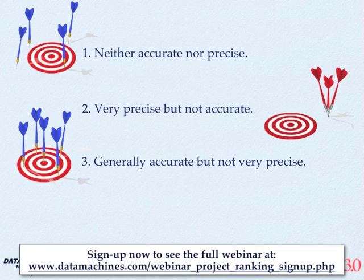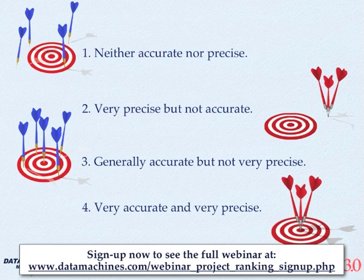And the fourth illustration, of course, shows a situation where the person throwing the darts is both accurate and precise. The garbage in, garbage out problem occurs most often when it is assumed that the data is represented by the last illustration — that is, being both accurate and precise — but this is almost never the case.